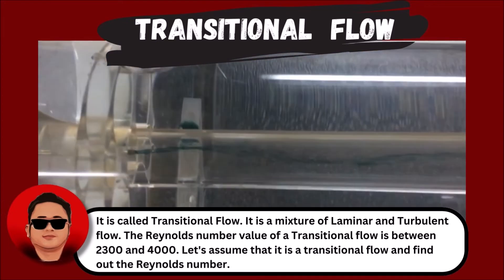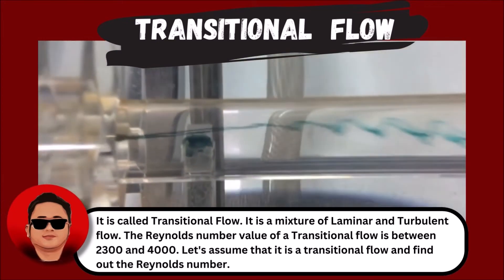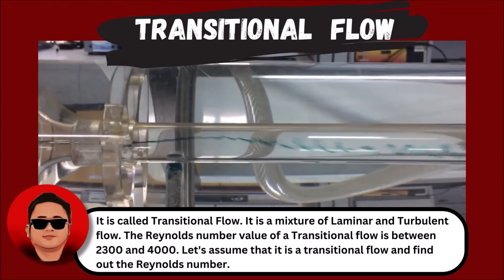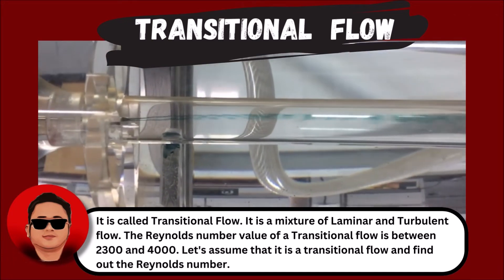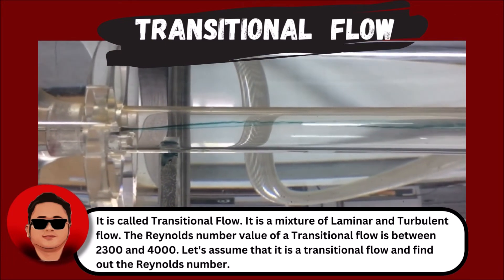It is a mixture of laminar and turbulent flow. The Reynolds number value of a transitional flow is between 2300 and 4000. Let's assume that it is a transitional flow and find out the Reynolds number.